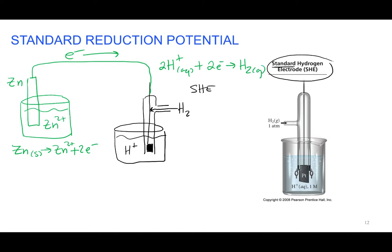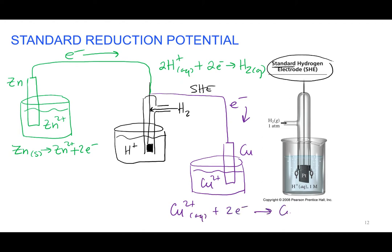Or you could hook something up to it that reduces the other half reaction. So we could hook up copper to that other half reaction. So if we instead hooked up the copper half cell to the standard hydrogen electrode, the electrons would spontaneously flow from the hydrogen to the copper. And it would reduce the copper. So copper plus two would gain those electrons to form copper solid.